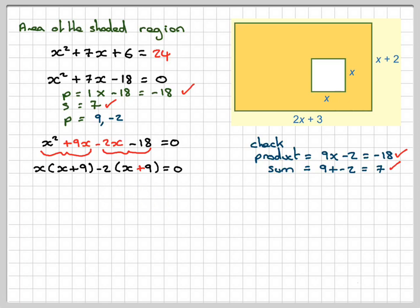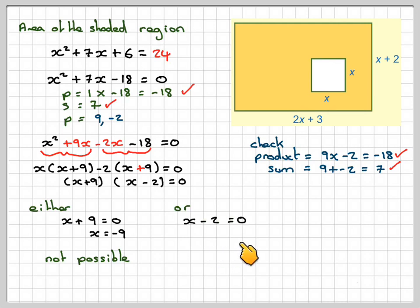So therefore, we now have a common factor of x plus 9, and we're left with x minus 2. So either x plus 9 is equal to 0, which gives x is equal to minus 9. That's not possible, you can't have a negative length here. Or x minus 2 is equal to 0, which gives that x is equal to 2. And therefore, the solution is x is equal to 2 centimeters.